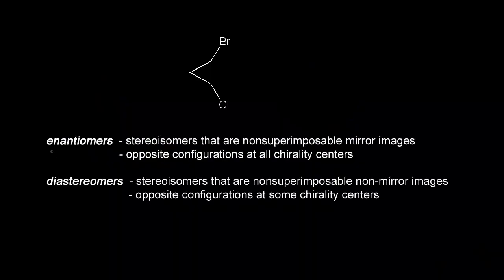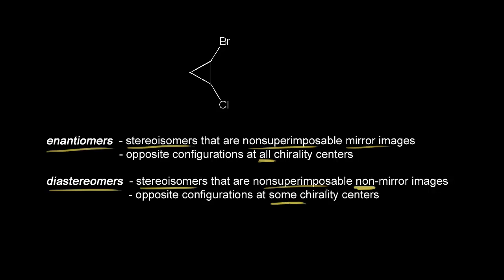We've already spent a lot of time talking about enantiomers. These are stereoisomers that are non-superimposable mirror images of each other, and they have opposite configurations at all chirality centers. Diastereomers are also stereoisomers, but these are stereoisomers that are non-superimposable, non-mirror images of each other. So these are stereoisomers that are not enantiomers, and diastereomers have opposite configurations at some chirality centers.